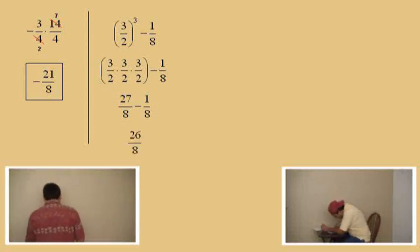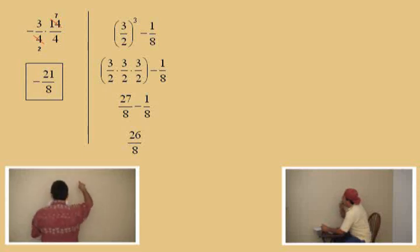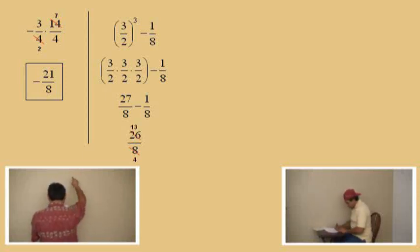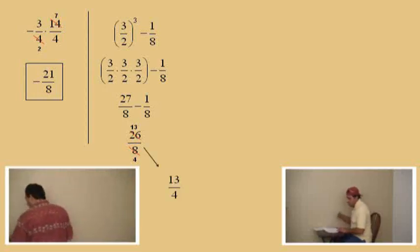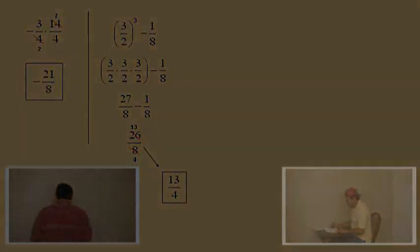So, now here, Charlie, we're going to reduce. We can divide the top and the bottom here by what number, Charlie? 2. 2. Okay. So we'll reduce. The top will become a what, Charlie? 13. And the bottom will become a 4. 4. That's right. So, our answer is 13 over 4. 13 over 4. And don't forget to box your answer there. Very good. Okay.